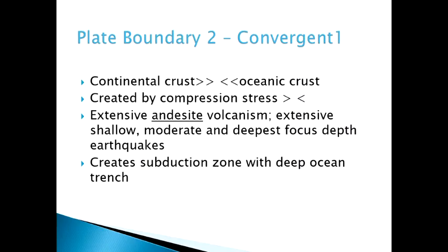That's the most important boundary type we'll cover, but there is another big one. If you have places where crust is created, you have to have other places where crust is destroyed. That's our other situation: convergent boundaries — places where different crustal pieces, or crustal masses, meet each other. The arrows now point towards each other instead of away. This is an example of compression stress.